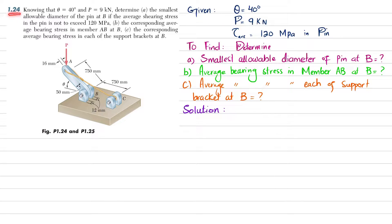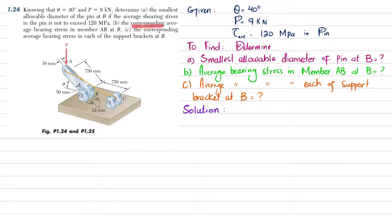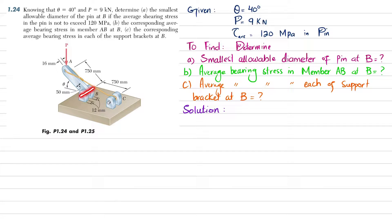Welcome back. Problem 1.24 - the statement is: knowing that theta is 40 degrees and P is 9 kilonewtons, determine the smallest allowable diameter of the pin at A and B if the average shearing stress does not exceed 120 megapascals. In part B, find the corresponding average bearing stress in member AB at B, and in part C, the corresponding average bearing stress in each of the support brackets at B.